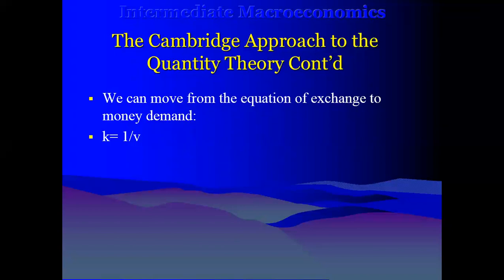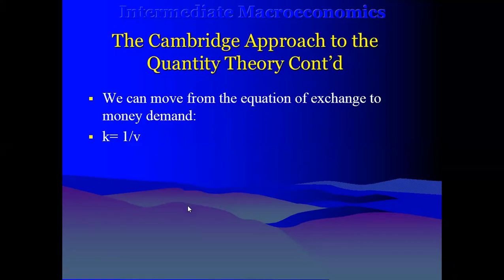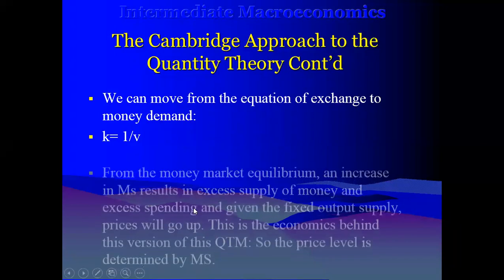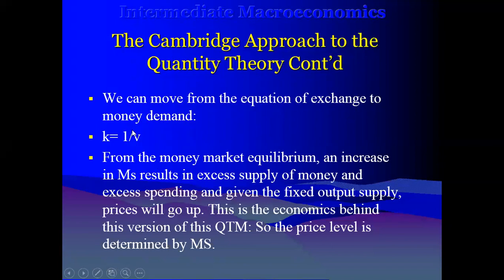If we take K as one over twenty, then it means we get MD equal to one over twenty times the nominal income. We will come back to all the details when we are doing the math. There is a market called the money market, and we have equilibrium in that market when money demand equals money supply.